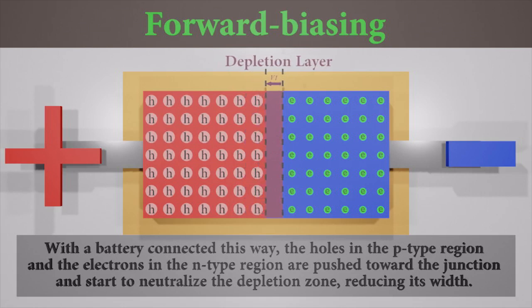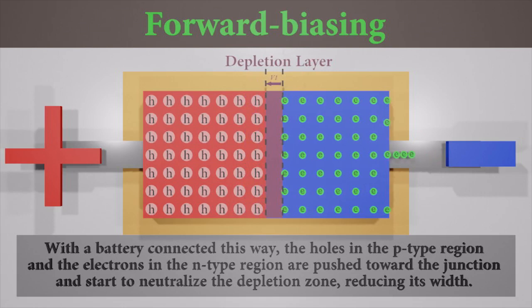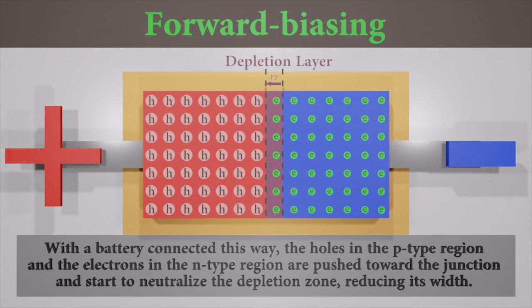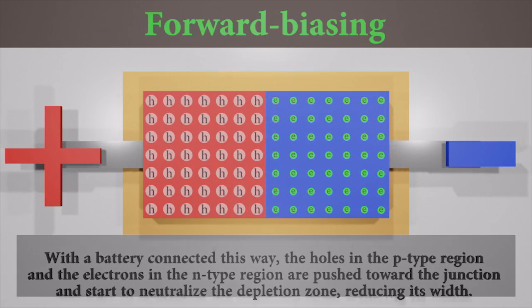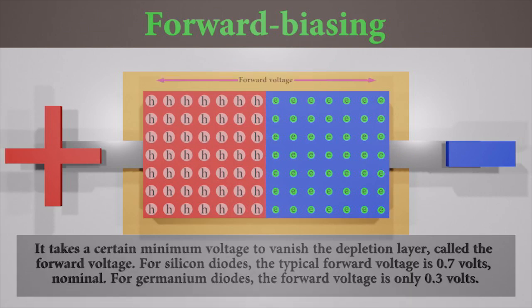With increasing forward bias voltage, the depletion zone eventually becomes thin enough that the zone's electric field cannot counteract charge carrier motion across the p-n junction. This takes a certain minimum voltage to accomplish, called the forward voltage. For silicon diodes, the typical forward voltage is 0.7 volts. For germanium diodes, the forward voltage is only 0.3 volts.